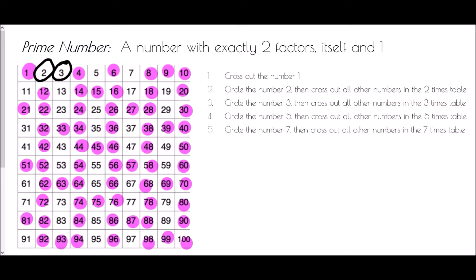The four times table is already crossed out because it was covered by the two times table. So next we go to the five times table — circle the number five and continue to get rid of everything in the five times table. Again, you'll notice quite a lot of these are already coloured in.